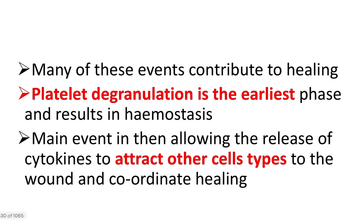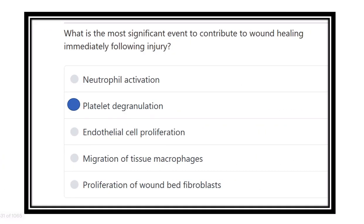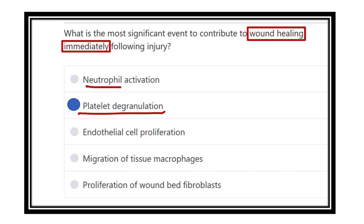Many events contribute to healing, but platelet degranulation is the earliest phase and results in hemostasis, allowing the release of cytokines to attract other cells such as neutrophils and macrophages. Our answer: the most immediate event after wound formation is platelet degranulation. Neutrophils come next, then endothelial cell proliferation occurs later, migration of tissue macrophage occurs at about 48 hours, and proliferation of wound bed fibroblasts is the last event.